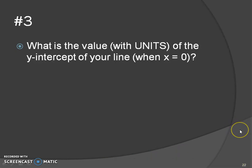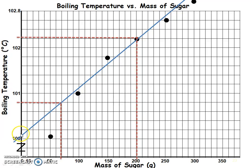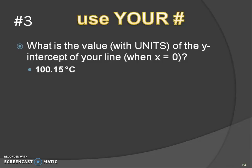Question three: what is the value of the y-intercept of your line? In other words, when x equals zero, where is your y? Your line should cross the y-axis — if it doesn't, extend it with a ruler. Then find that value. My value was 100.15 degrees Celsius, but yours might be below 100 degrees Celsius.